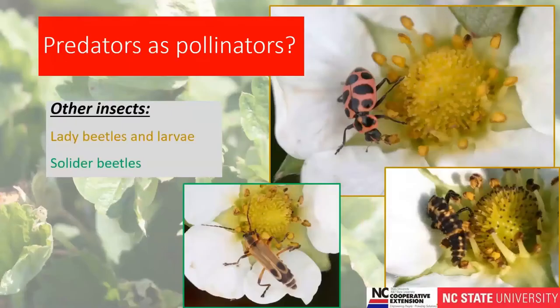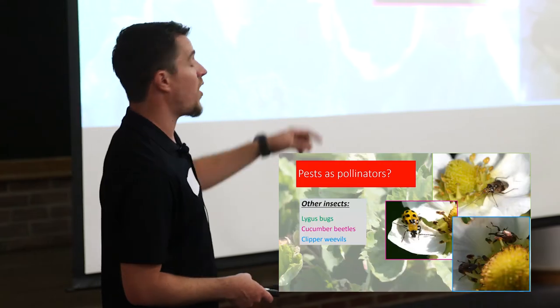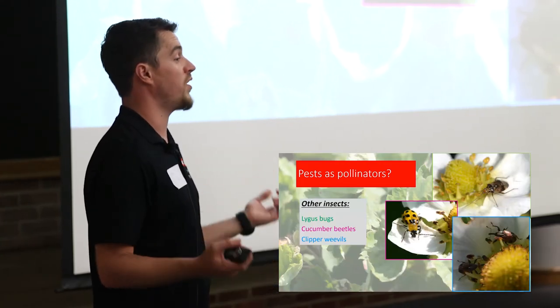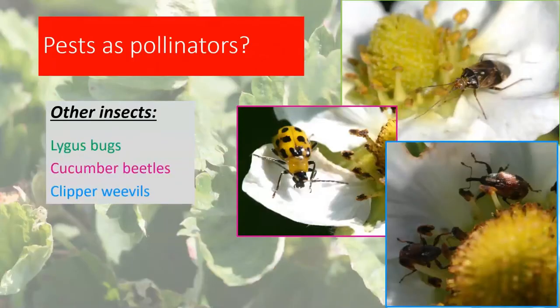Regarding predators, syrphid fly larvae are predatory on aphids — so they help pollinate and control pests. Lady beetles, soldier beetles, and other insects may also feed on some pollen while visiting flowers. For pests, the lygus bug is very problematic because it causes fruit damage that makes berries unmarketable. Something like the clipper weevil or cucumber beetle might feed on petals or clip off blooms, but plants are fully able to compensate — it won't ultimately affect yield, and these insects may even help pollinate by walking across flowers. Pest densities determine whether they're economically damaging or just a nuisance.